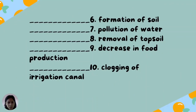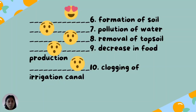Continuing Learning Task Number 4: Number 6: Formation of soil — heart-eye emoji. Number 7: Pollution of water — wow emoji. Number 8: Removal of topsoil — wow emoji. Number 9: Decrease in food production — wow emoji. Number 10: Clogging of irrigation canals — wow emoji.